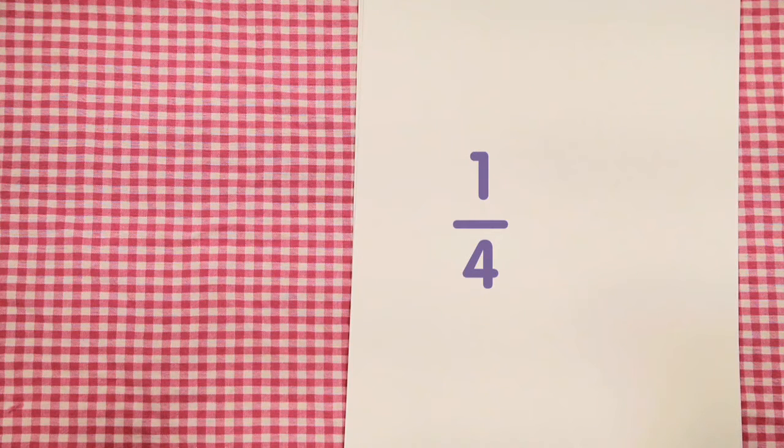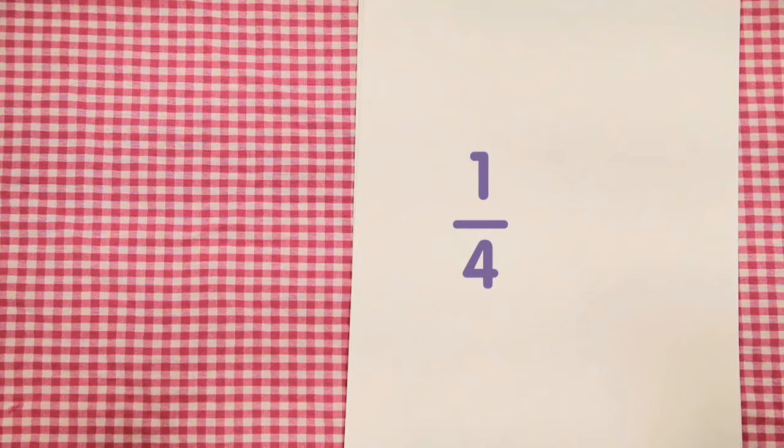The top number is the number of parts that you have. The second number tells us the total number of parts.